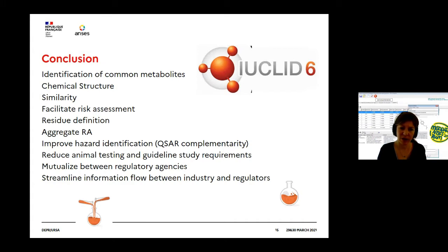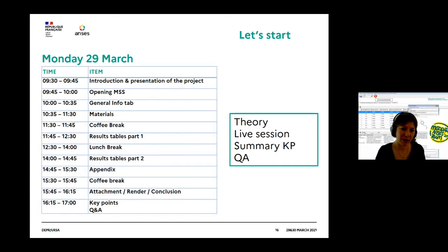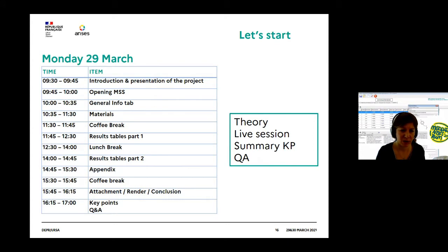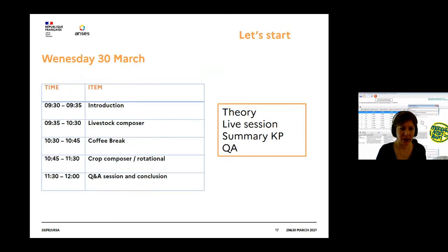In the context of the transparency regulation implementation, it was agreed that data on metabolism in the area of residues, generated with the Metapath Composer software, should be submitted as part of the IUCLID dossier. Today we will explain how to complete MSS Composers for Plant Metabolism Studies — presenting the different parts of the plant composer, how to open a composer, how to fill in materials and methods, results, and the appendix. On Wednesday we will focus on composers for livestock and rotational crop studies. For each part we will use a theory chapter, a live session, and a video, followed by a Q&A session.